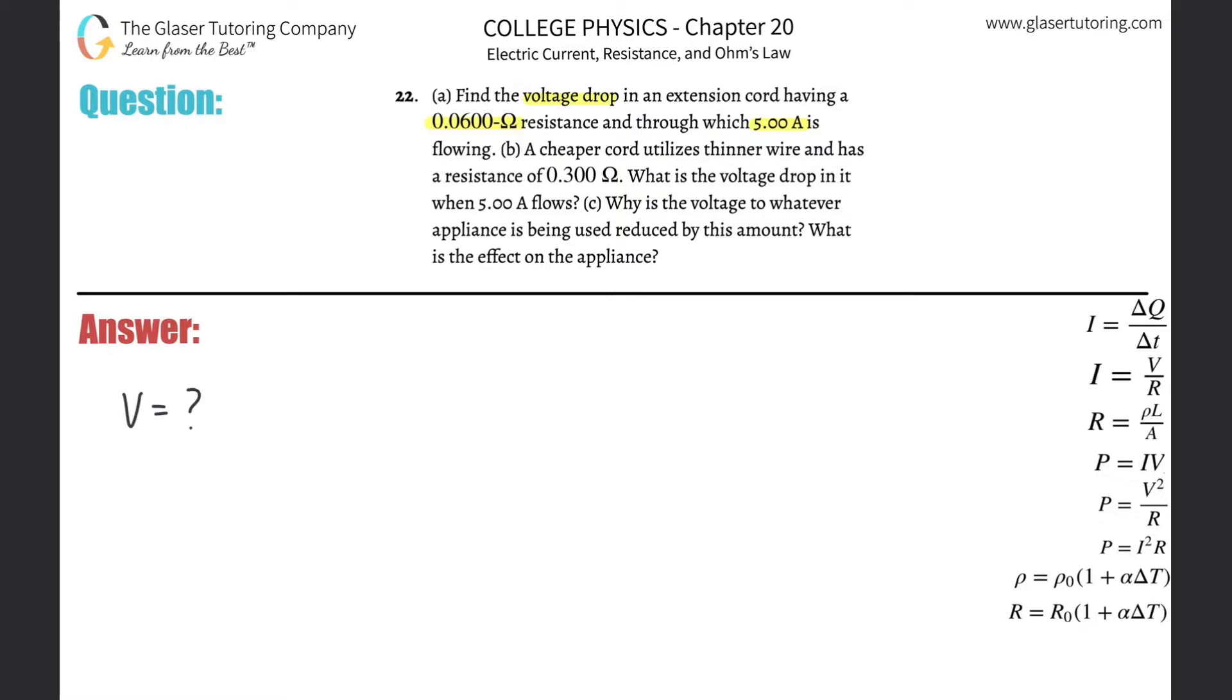Question: we know the resistance, they told that to us, it's going to be 0.06 ohms and the current here is in amps, 5 amps. So everything's in the standard units.